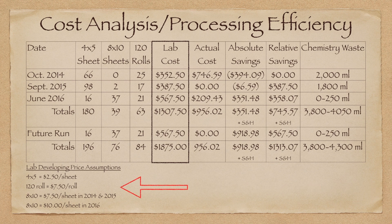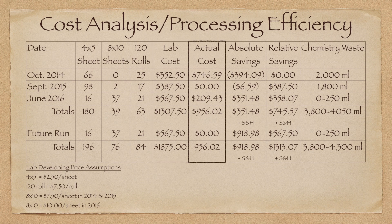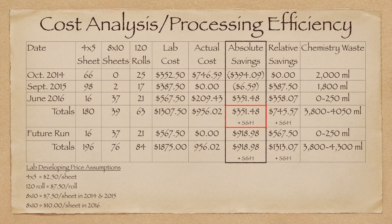It is important to note that the processing cost of 8x10 sheet film went up for 2016, so the June 2016 costs reflect this change. Also, these prices do not include the cost of shipping and handling. The following column shows the actual cost of developing the film myself with my JoBo processor. The next two columns list the absolute and relative savings for processing the film myself. I'm defining absolute savings as the monetary difference between the lab cost and actual cost, taking into consideration my initial sunk cost of $746.59 on a perpetual basis. This column evaluates when I will actually begin to see savings. As you can see, the absolute savings didn't manifest until the third time I ran this process, and to date has totaled about $350 plus shipping and handling.